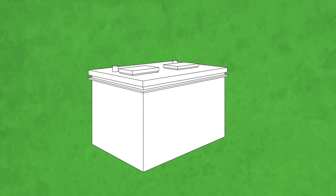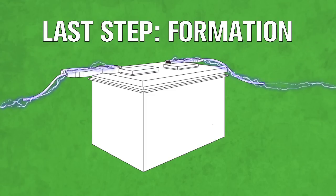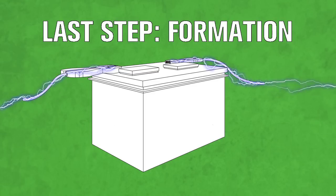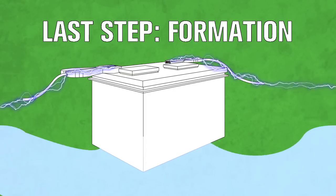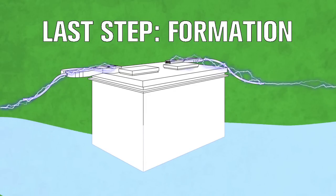Chemically, the battery isn't ready to carry a charge until the last step, formation. That's where electricity slowly reforms the chemicals of the paste while charging the battery's power. All the while, cold water keeps the battery's temperature down as the electricity charges it.